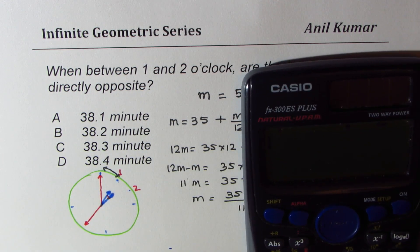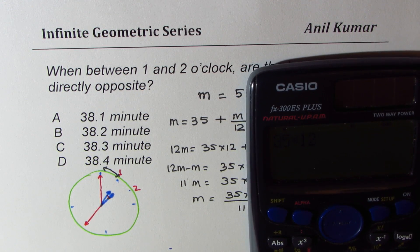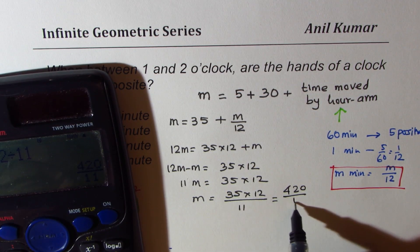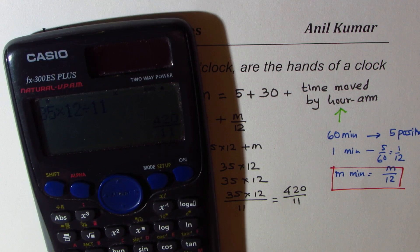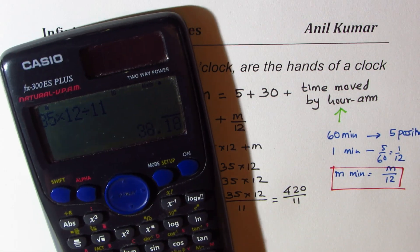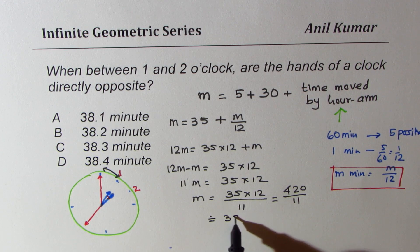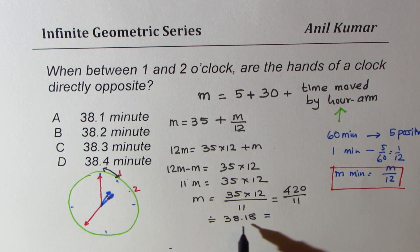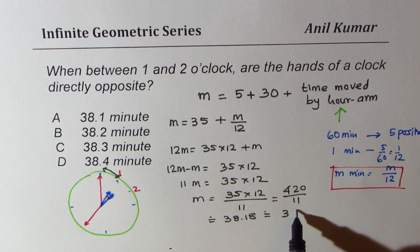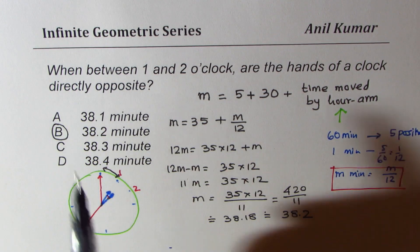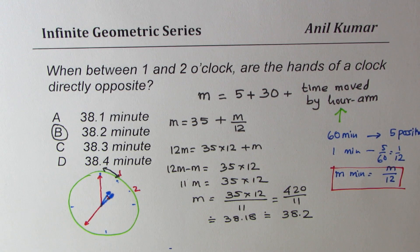So let's calculate this answer. We have 35 times 12 divided by 11 equals 420 by 11, so in decimals, it would be 38.18, which could be approximated as 38.2. So B is the right option. It does make sense to you. B is the right option.